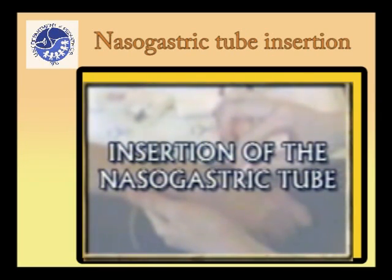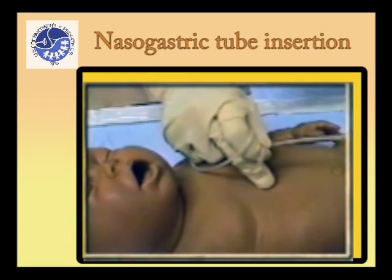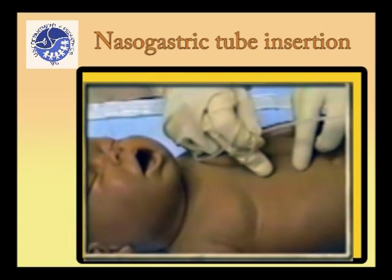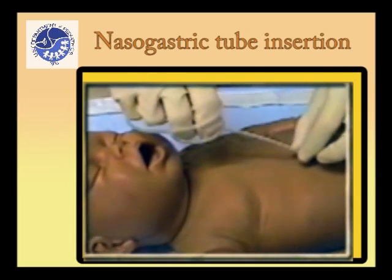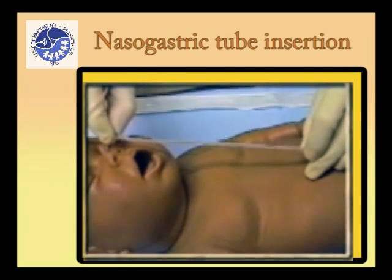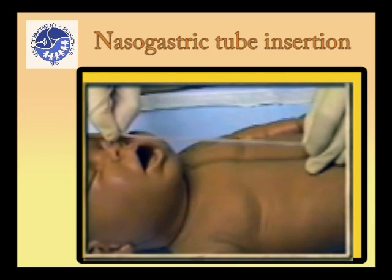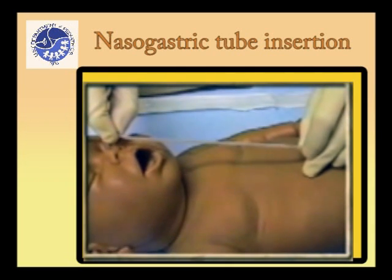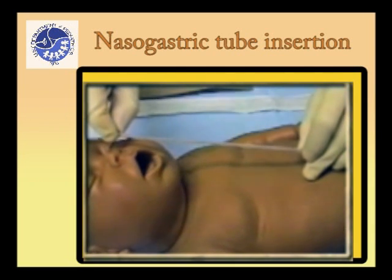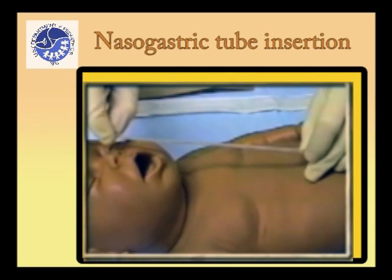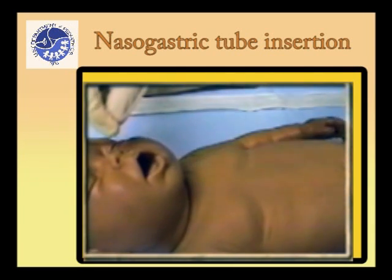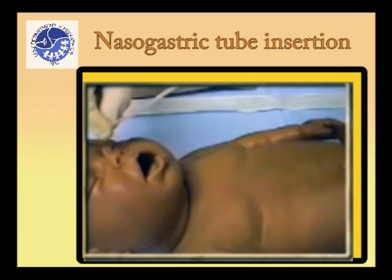Here are the steps on how to insert a nasogastric tube. Place the terminal end of the selected nasogastric tube 5 to 8 cm below the xiphoid process and measure to the patient's nose. This point is marked on the tube with crayon or tape and represents the length of tubing required to enter the stomach.